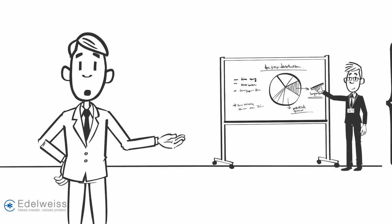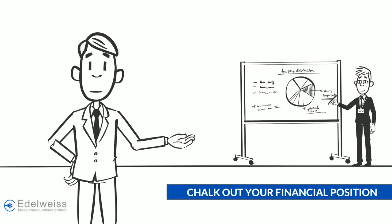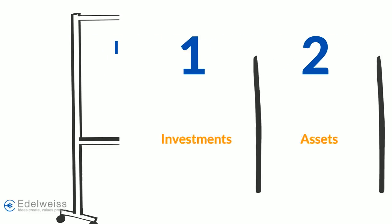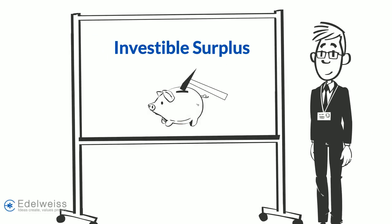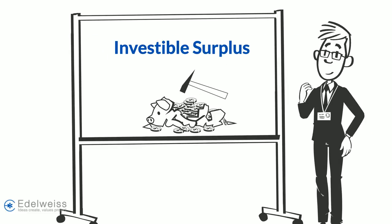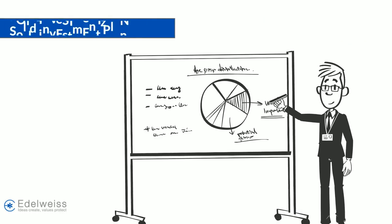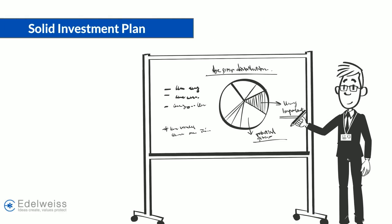Step two: chalk out your financial position. Begin by making a statement of all your investments, assets, and liabilities. This will provide you with a clear picture of the investable surplus you have and set the tone for a solid investment plan.